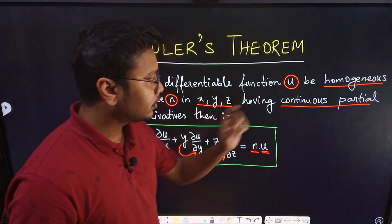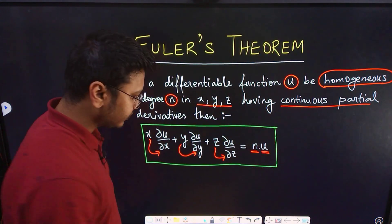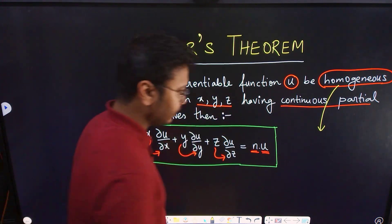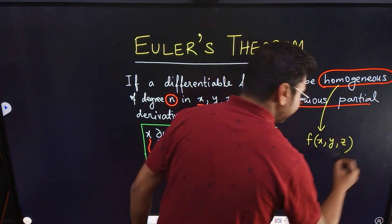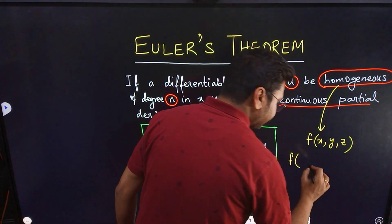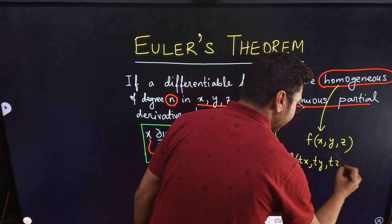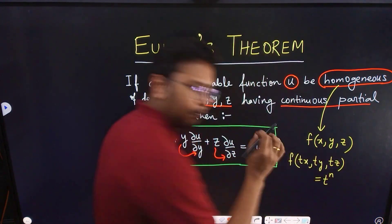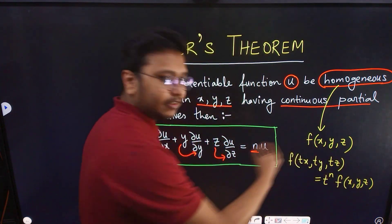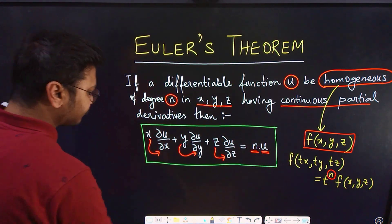The first thing we need to understand is the meaning of homogeneous. A function in terms of x, y, and z is homogeneous if, when we replace all x, y, z by tx, ty, and tz, a power of t comes out common and the function remains as it is. If this happens, the function is homogeneous and its degree is n.